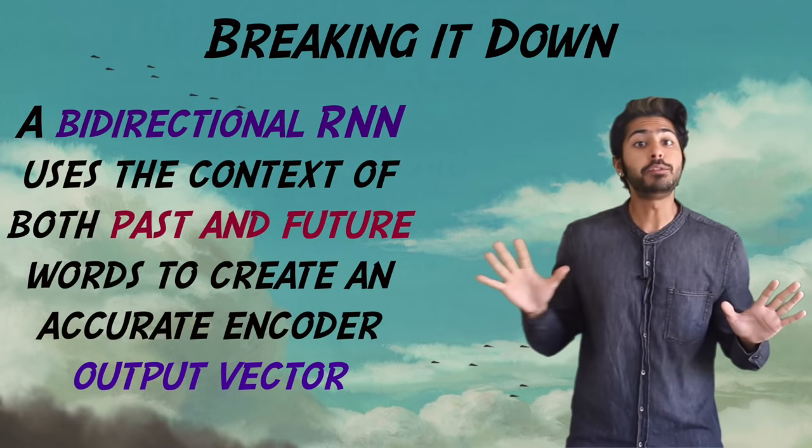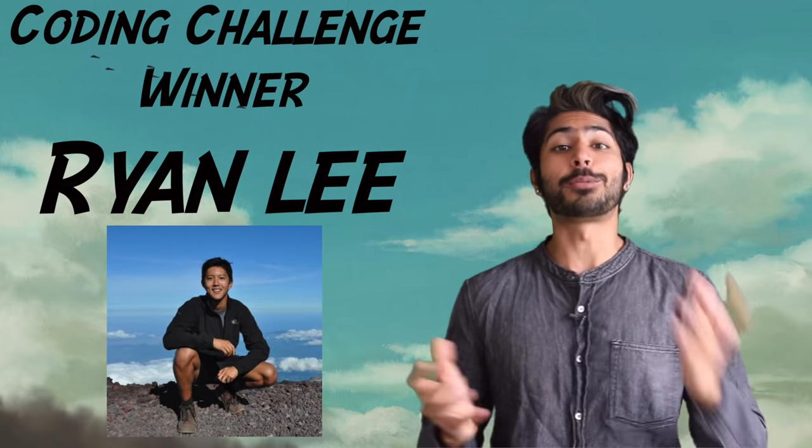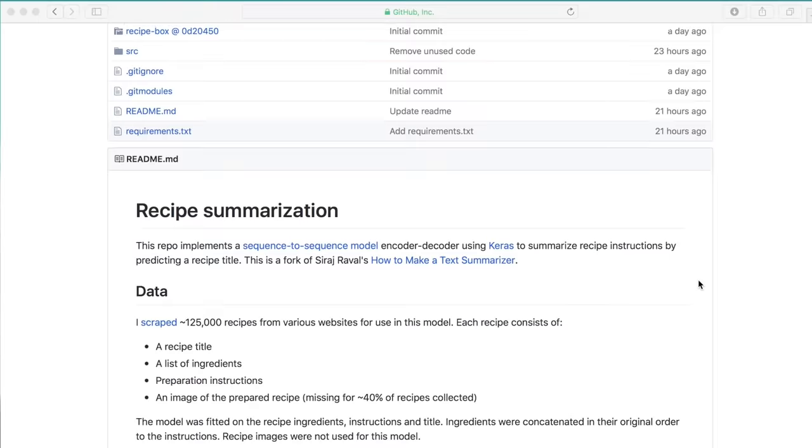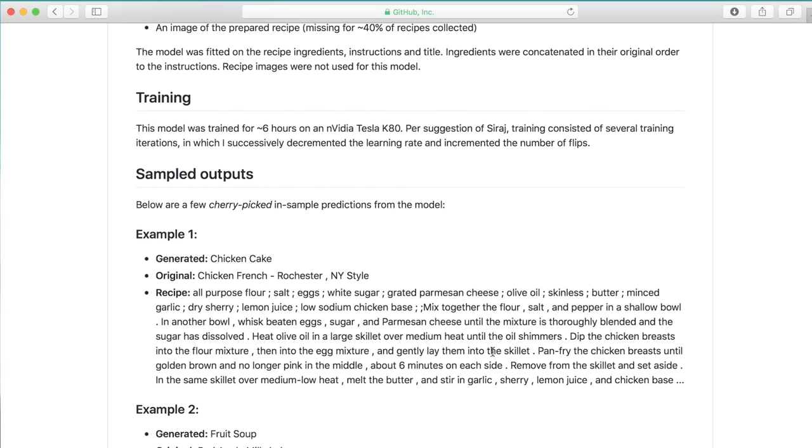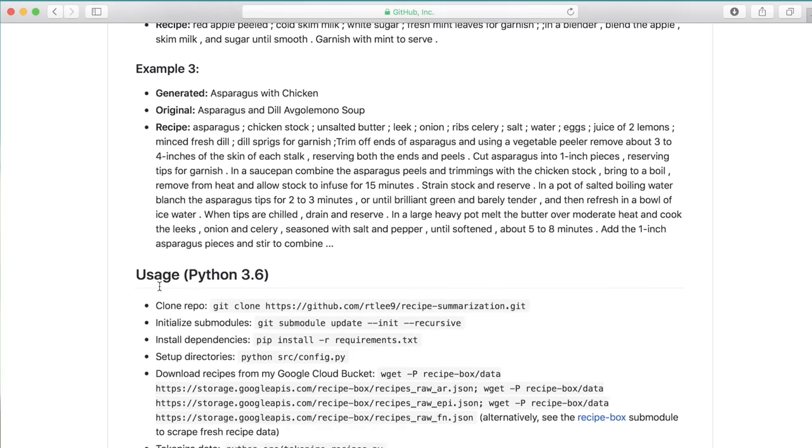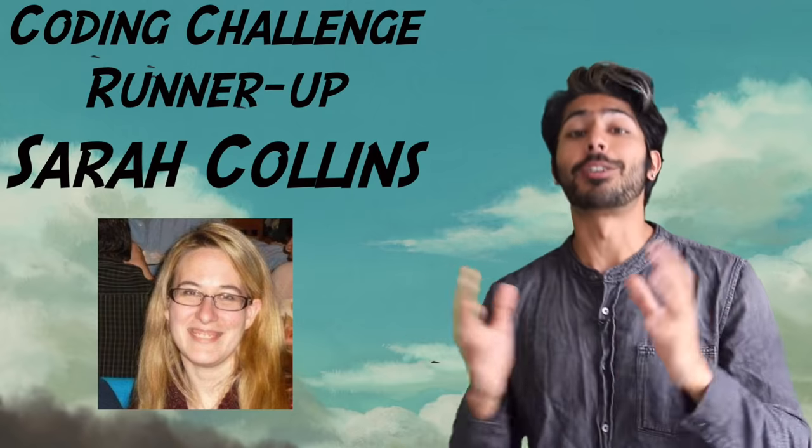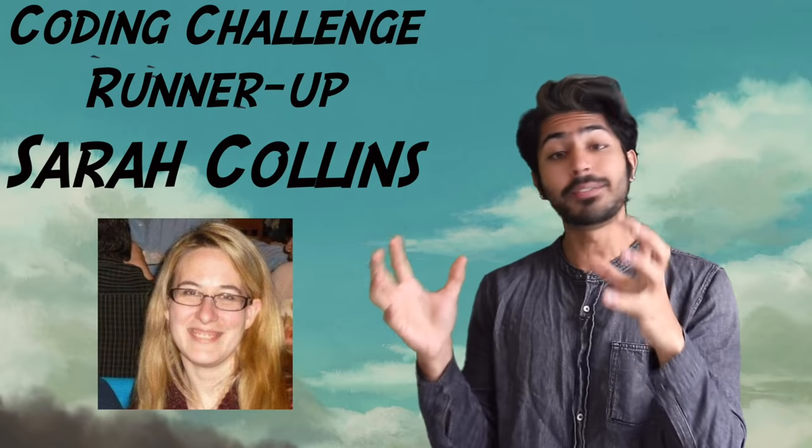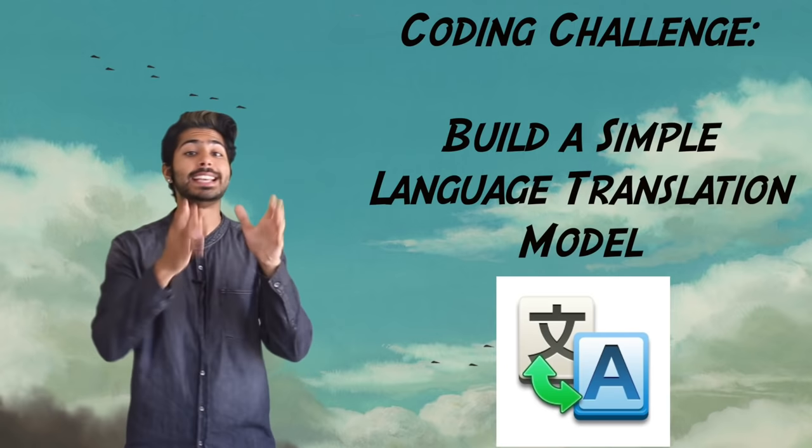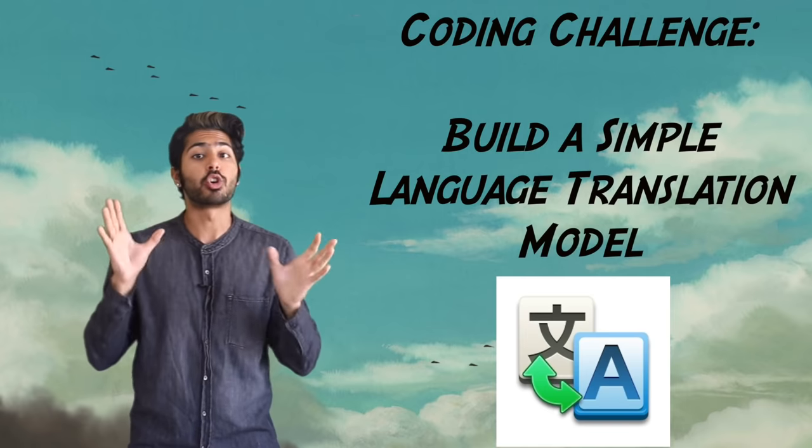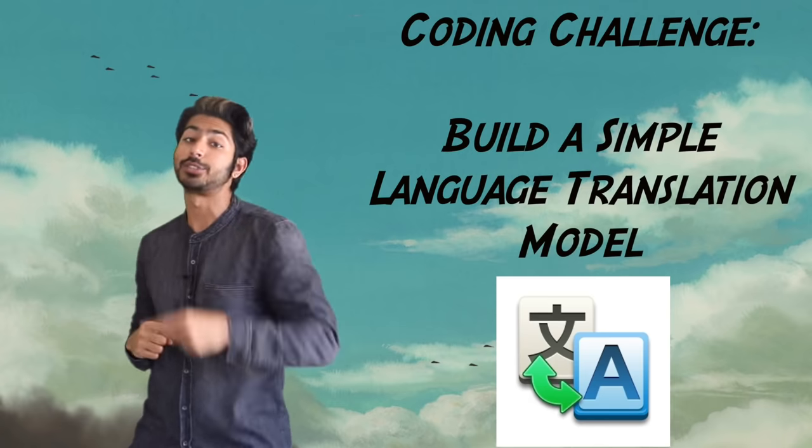The coding challenge winner from last week is Ryan Lee. This was very impressive. He created a recipe summarizer by scraping 125,000 recipes from the web and documented it all beautifully with installation steps so you can reproduce the results yourself. Wizard of the week. And the runner-up is Sarah Collins. Her code converts scientific papers to text and prioritizes them by topic. This week's coding challenge is to create a simple translation system using an encoder-decoder model. All the details are in the README. Post your GitHub link in the comments and I'll announce the winner next week.